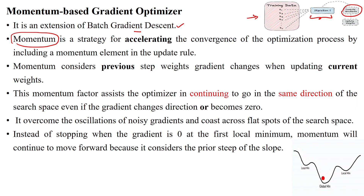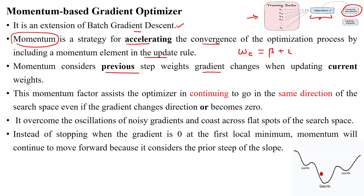Additionally, it uses a momentum parameter to accelerate the converging process by adding an element during the weight parameter update. The momentum considers the previous step's gradient changes — at time period t, it uses the momentum value from time period t minus one, using changes from the previous step to update the current time step weights.